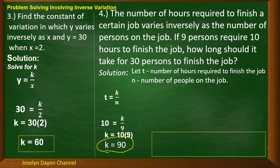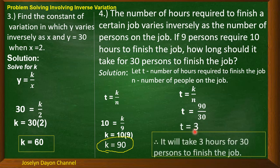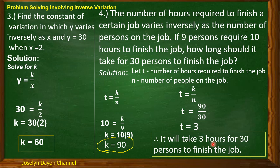Now, use this value to solve for t when 30 persons are working on the job. Substitute k = 90 and n = 30 into t = k/n: t = 90/30 = 3. Therefore, it will take 3 hours for 30 persons to finish the job.